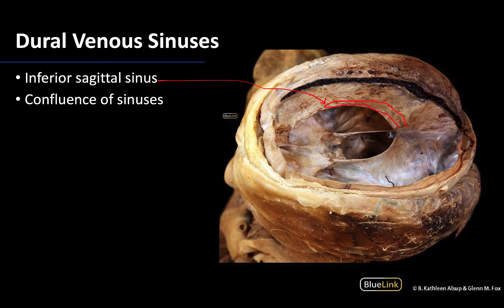You can see a lot of blue in this general region — this is another sinus, and things are collecting along this area. This is where the confluence of sinuses is located: a large area where multiple venous sinuses drain. In fact, the superior sagittal sinus as well as the inferior sagittal sinus drain into the confluence, though the inferior sagittal sinus takes a more roundabout way, draining into another sinus before reaching the confluence.